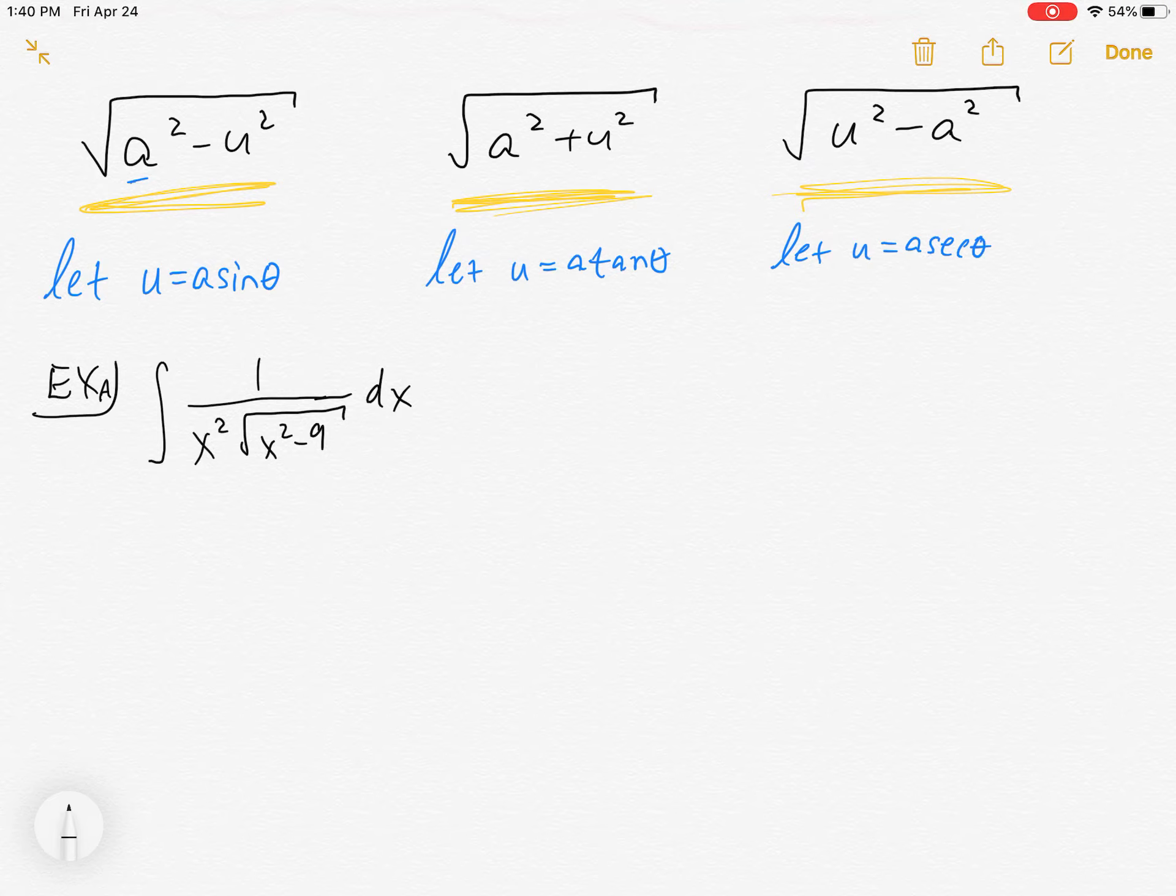Now this actually looks like a pretty good arc secant candidate except for that extra x. Arc secant would want to just have an x there, not x squared, so there's an extra x. So this is going to be a good candidate to do this method. Which one does it look like of those three up there? It looks like the third one.